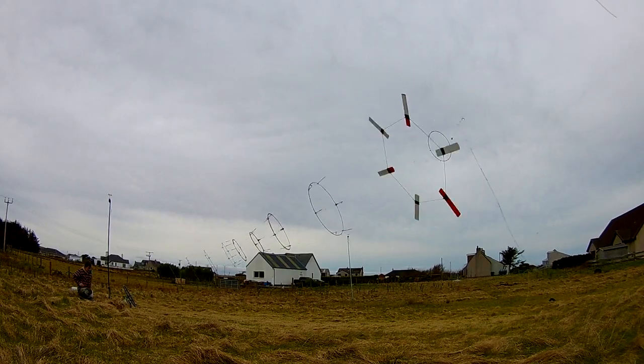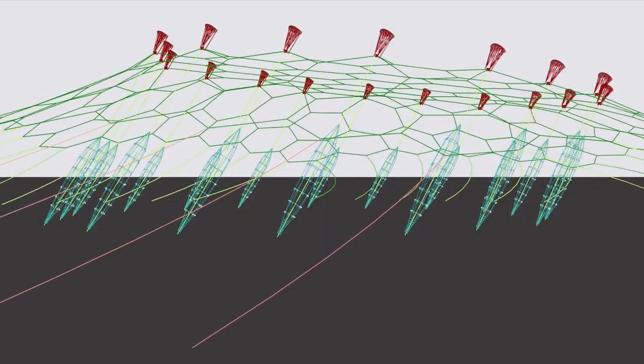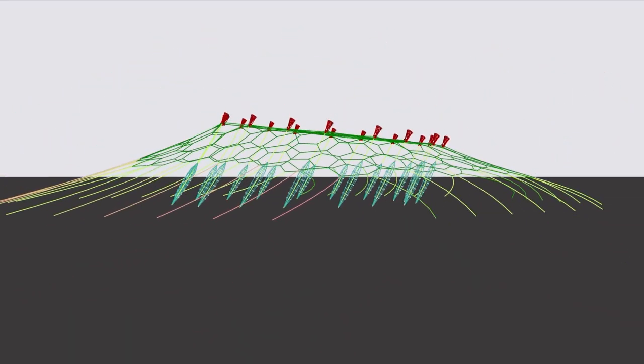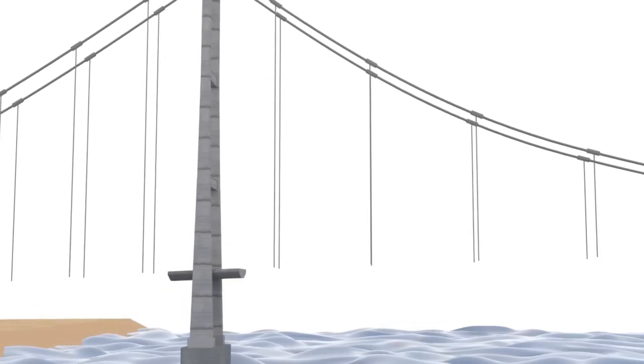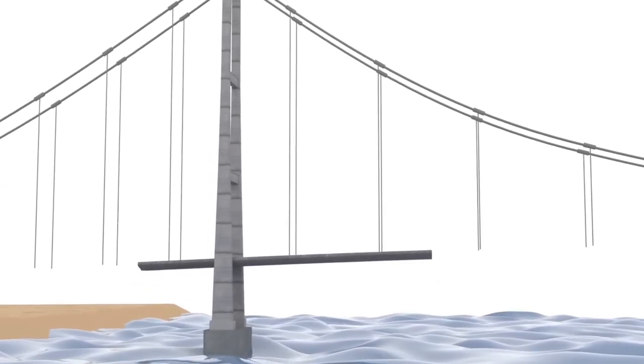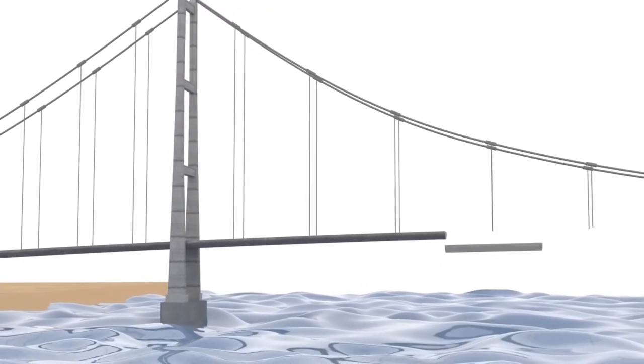The kite turbine is made of a network of kites. The structure of the kite network is kept in tension by the pressure of the wind. When structures work in tension they can use materials more efficiently because the materials align with forces.